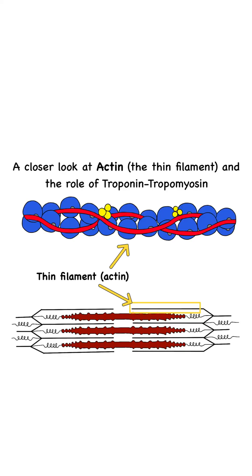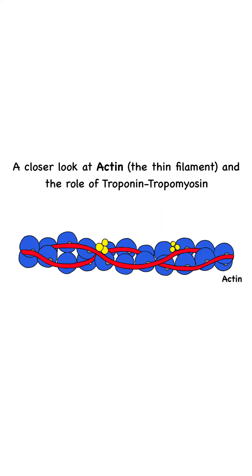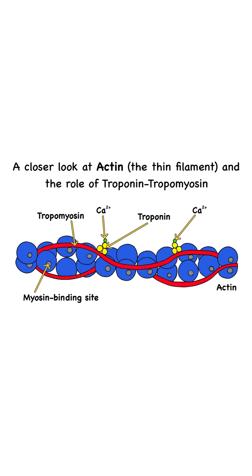Inside a resting muscle fiber, the binding sites on actin are blocked by a protein called tropomyosin. Tropomyosin is held in place by troponin. When an action potential travels down the sarcolemma and into the T-tubules, it triggers the sarcoplasmic reticulum to release calcium ions into the sarcoplasm. Calcium binds to troponin, which shifts tropomyosin away and exposes the myosin binding sites on actin.